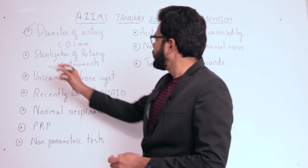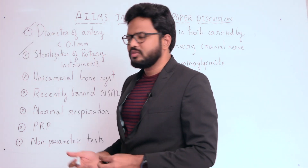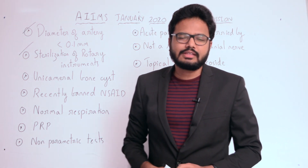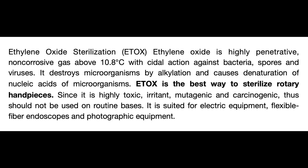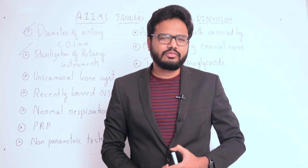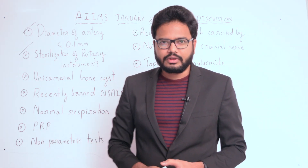Moving on to the next topic: sterilization of rotary instruments. Ethylene oxide sterilization is considered to be the best way to sterilize rotary handpieces. You can go through the rest of the literature in your free time.